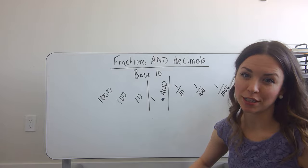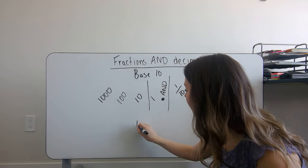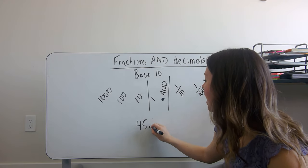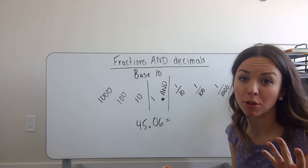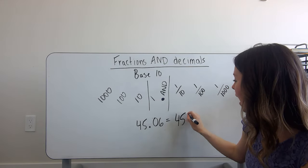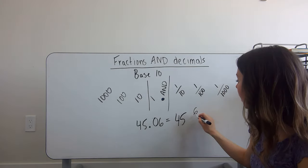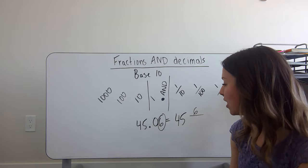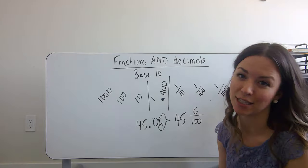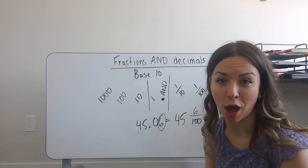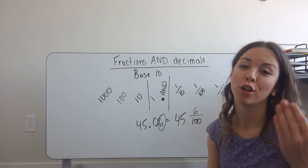The last thing I want to talk about is what if you have a whole number in your decimal, like 45 and six hundredths. To write this as a fraction, you're going to keep the whole number exactly how it is, and then just write the decimal part as a fraction. We have a six in the numerator, and since that six is in the hundredths place, I'm going to put 100 in the denominator. Take your time on your math quizzes, and if you're not understanding this concept, rewatch it again.